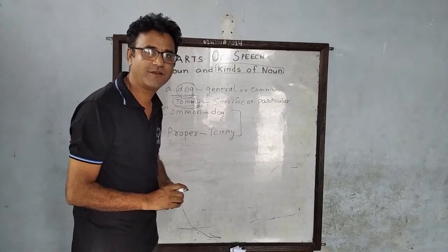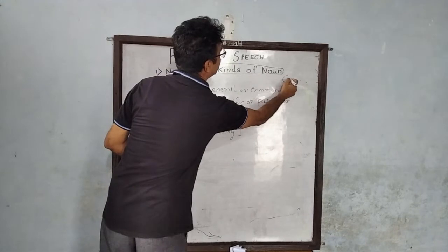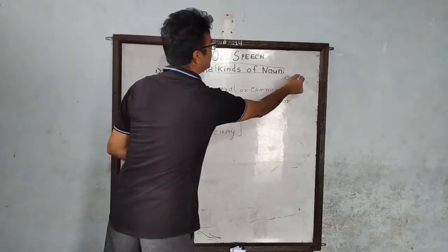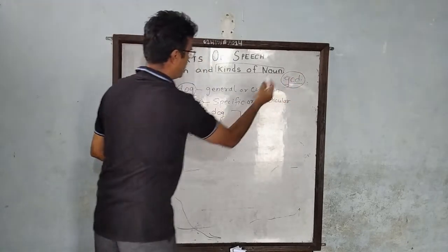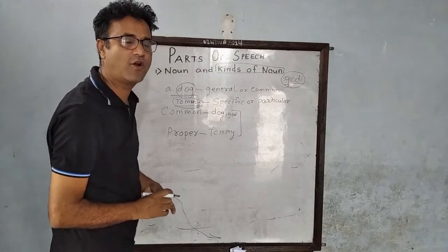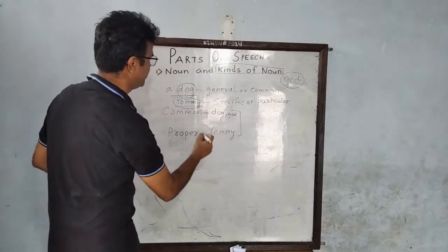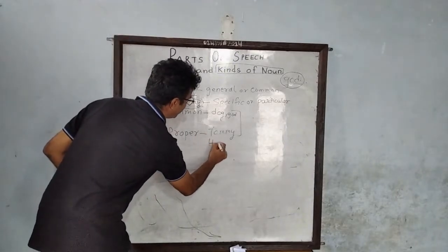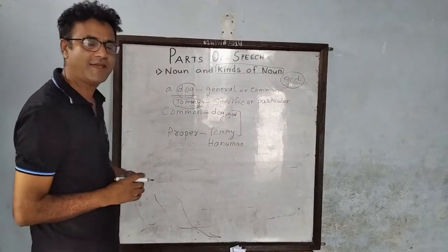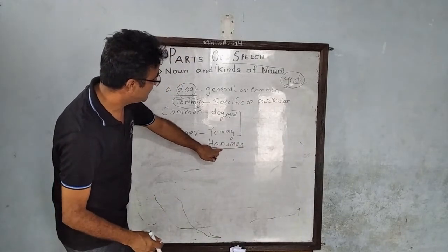What did you see? God. So this God means general — this is a common noun. Can the God be named? It was Hanuman. This Hanuman is a particular God, so it is a proper noun.